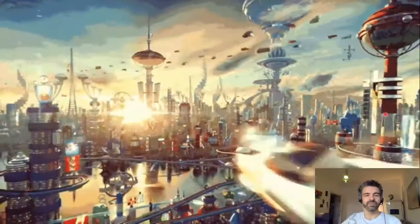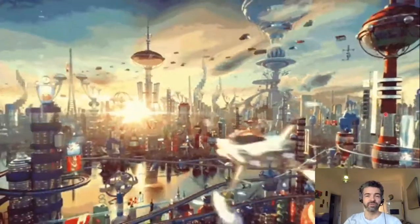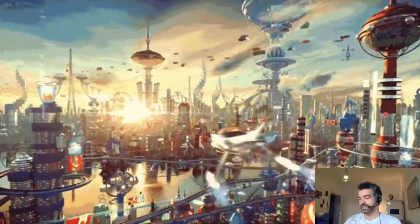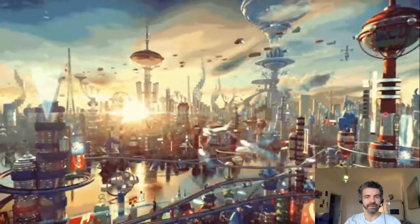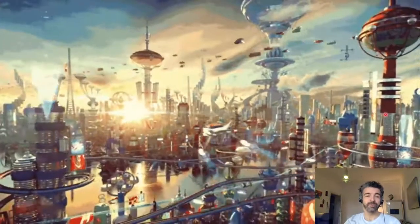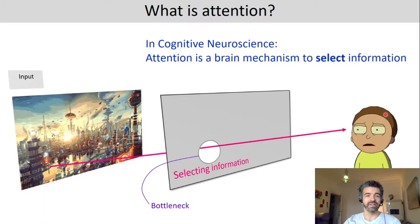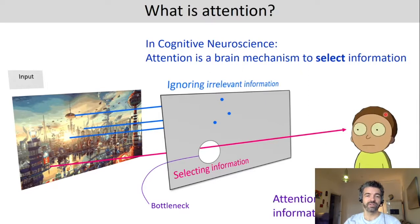So when do we need visual attention in everyday life? For example, if you're navigating your flying car in a modern city — this is Southampton a hundred years from now — you will easily see that there's much more information than you can process at any given time, and this is where attention comes in handy. Attention in cognitive neuroscience refers to a selection mechanism, a filter. We have a lot of input information and a bottleneck; we cannot select all the information at the same time, so some information is selected while other information is filtered out and ignored, avoiding information overload.